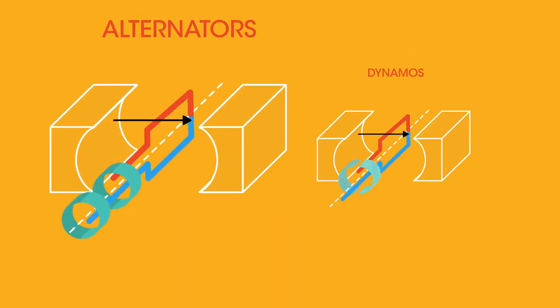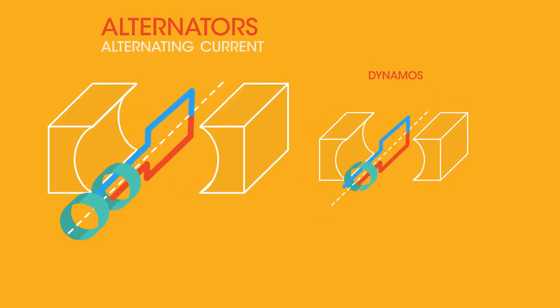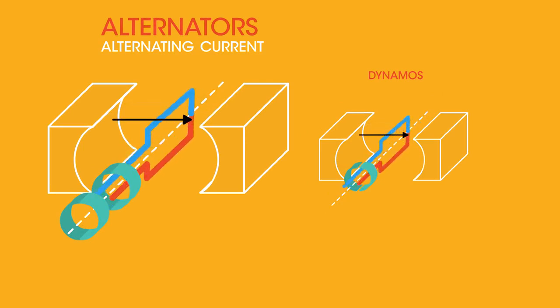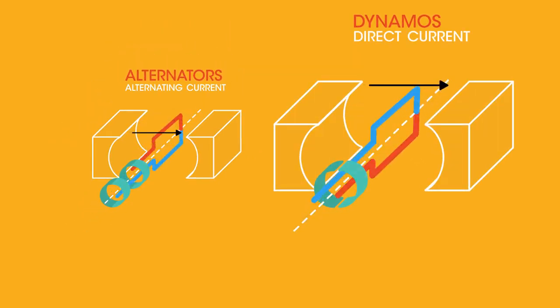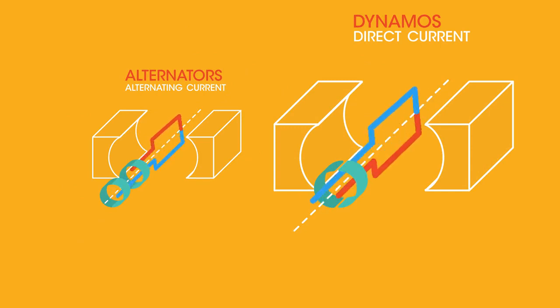So there we have alternators that generate alternating current due to having two complete commutator rings, and dynamos that generate direct current because of having one split ring commutator.